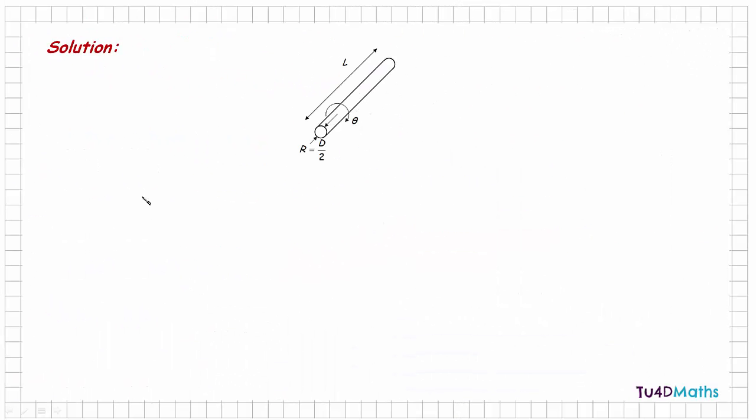We are told that the modulus of rigidity g is equal to r⁴θ / l. We can rewrite this as r⁴ × θ × l⁻¹. So g depends on the radius, the angle of twist, and the length of the bar.